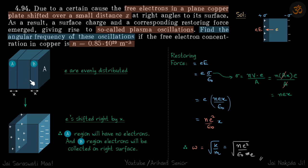Before anything happens, electrons are evenly distributed in this whole volume. Now the electrons are shifted right by x. All the electrons in this B region will come to surface A. A is the area; they will come to this right surface.